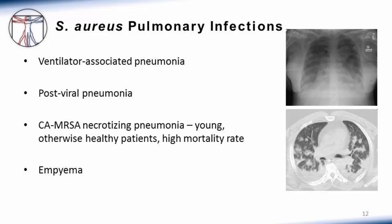A third staph aureus pulmonary syndrome is community-acquired MRSA necrotizing pneumonia. These cases first emerged in the early 1990s, primarily among young otherwise healthy patients, and were associated with a distressingly high mortality rate. A CT scan is shown of a patient with diffuse bilateral patchy infiltrates and effusions associated with community-acquired methicillin-resistant staph aureus infection. Lastly, staph aureus can cause empyema — infected fluid outside the lung in the chest cavity between the visceral and parietal pleura — and is the number one pathogen implicated in those presentations.